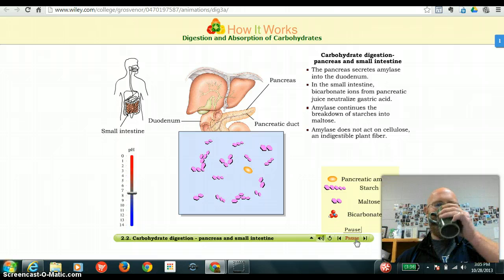Amylase acts on both glycogen and starches, but not on cellulose, an indigestible plant fiber. Can you tell me why it doesn't act upon that?